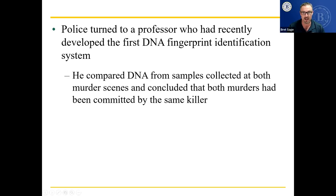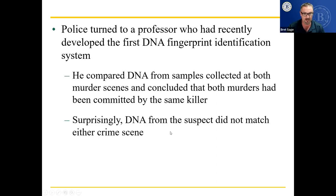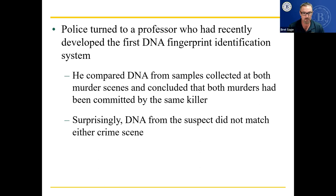The police turned to a professor who had recently developed the first DNA fingerprint identification system — this was back in the 80s. He compared DNA from samples collected at both murder scenes and concluded both murders were committed by the same killer. But then they found that the DNA from the suspect did not match either crime scene. He had been intimidated and pressured into confessing when he was innocent. The case was finally broken using DNA fingerprinting, the killer was found, his DNA matched the semen, and he was thrown in jail.